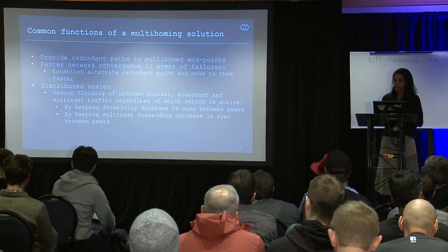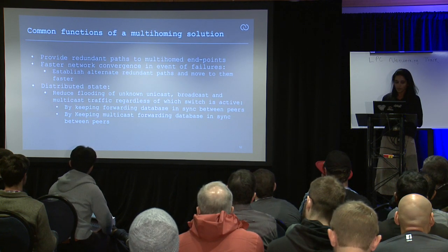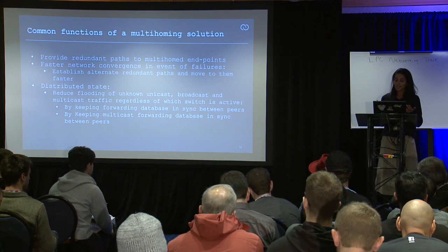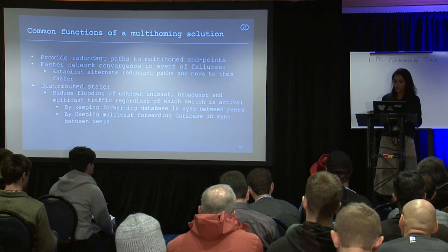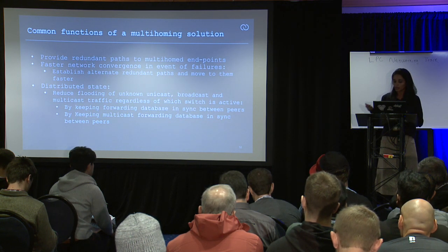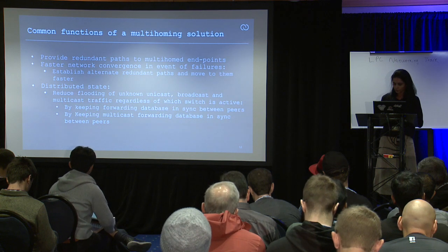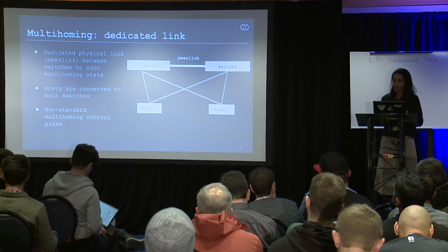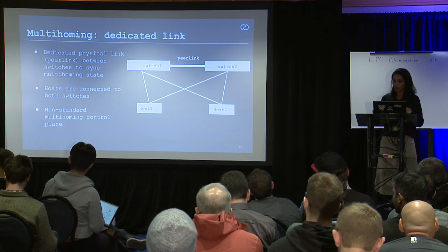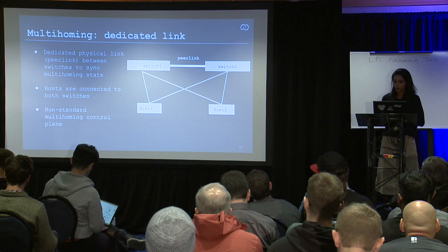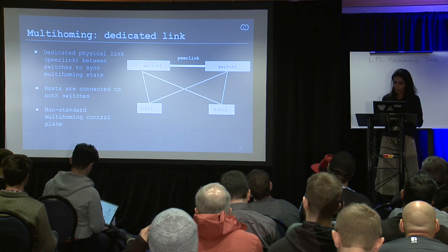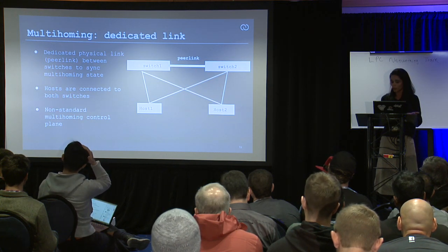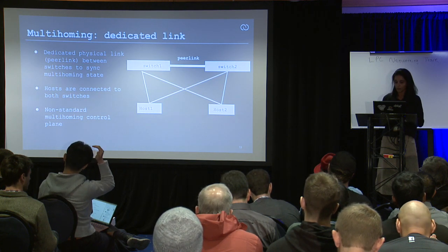Common functions include redundant paths to multi-homed endpoints, faster network convergence, and switches maintaining distributed state — they sync state between each other, keeping mirrors of the same database so that if one switch or link goes down, your host still has connectivity. This is a typical setup: you have a peer link, a bond or single port connected between the switches. Hosts are connected to both switches, using non-standard multi-homing control plane protocols that the industry has been seeing for decades.